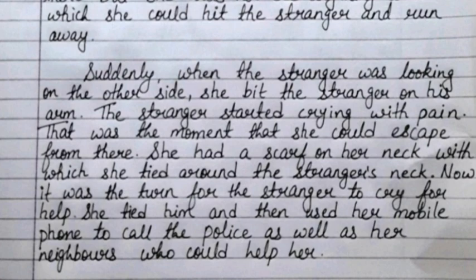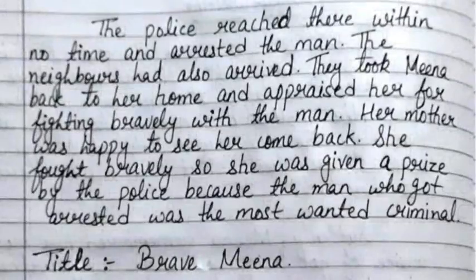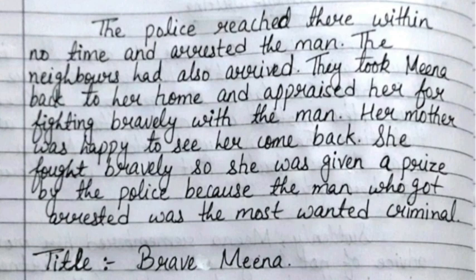She had a scarf on her neck with which she tied around the stranger's neck. Now, it was the turn for the stranger to cry for help. She tied him and then used her mobile phone to call the police as well as her neighbors who could help her. The police reached there within no time and arrested the man. The neighbors had also arrived. They took Meena back to her home and praised her for fighting bravely with the man. Her mother was happy to see her come back. She fought bravely so she was given a prize by the police because the man who got arrested was the most wanted criminal.